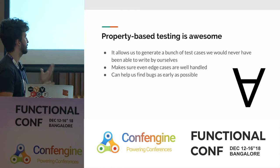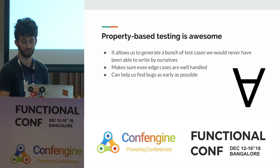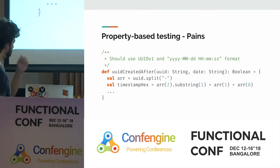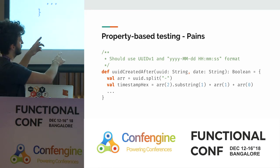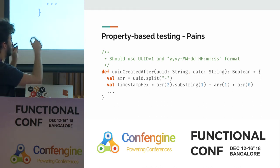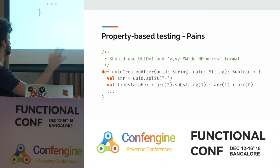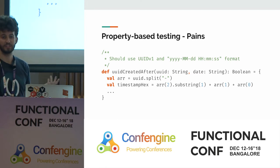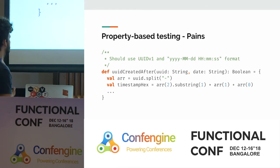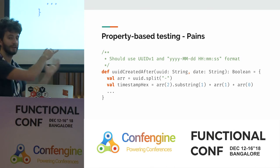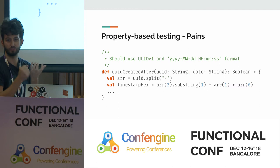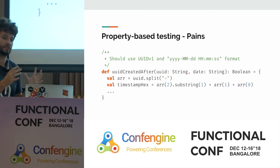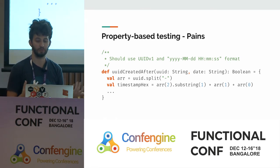There are some pains where property-based testing can be difficult. Consider a function called `uuidCreatedAfter` in Scala that takes a UUID as a string and a date as a string, returning a boolean. A comment says it should use UUID version one and the date should be in a specific format. If you try to write a property-based test, you'll run into errors quickly — this function doesn't work for any string. We're lying: the inputs shouldn't be strings, they should be a UUID and a date. How do we fix this?